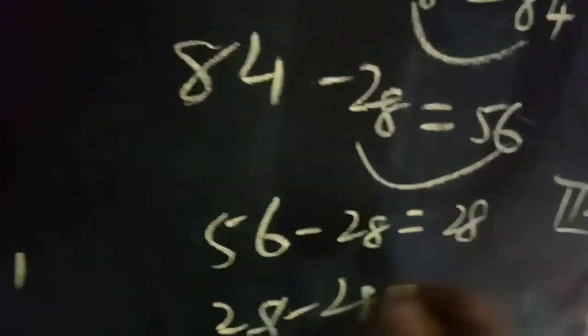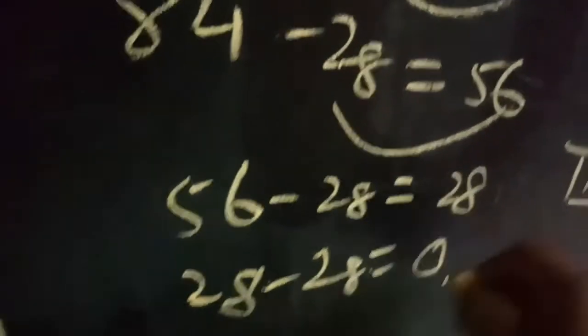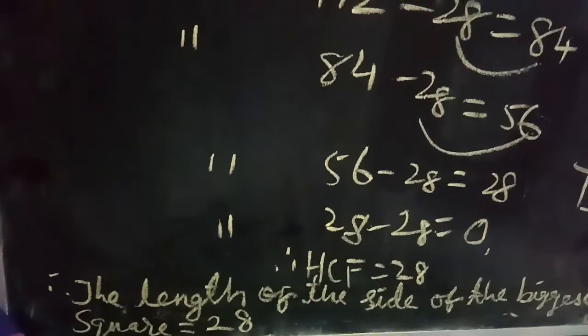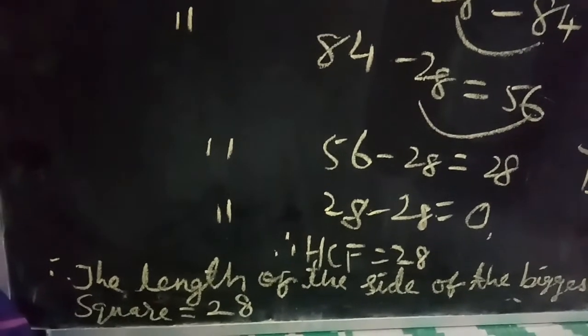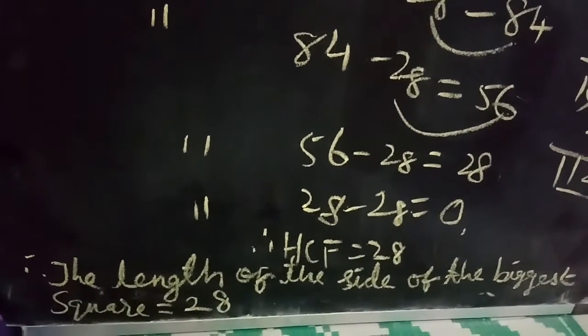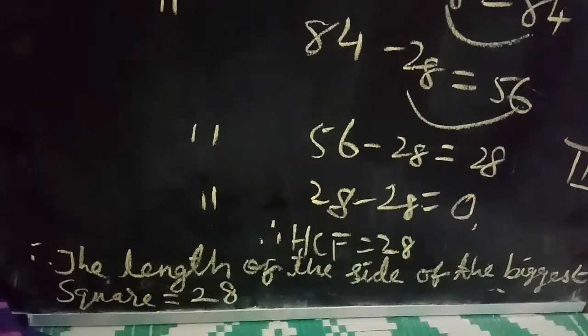56 minus 28 equals 28. 28 minus 28 equals 0. Therefore HCF equals 28. Therefore the length of the side of the biggest square equals 28 mm.